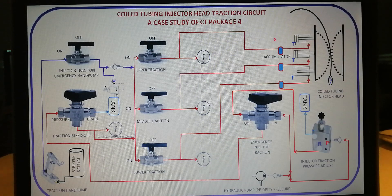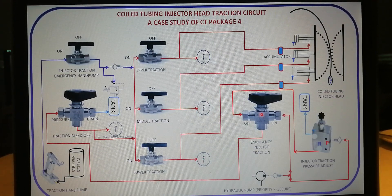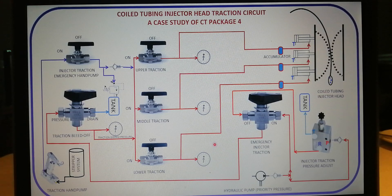The applied pressure to each of the traction cylinders is monitored with their respective pressure gauges. Each of the non-active ends of the traction cylinders is then routed back to the tank. This concludes the first phase of this presentation. Phase 2 is centered on traction control using the emergency injector traction three-way valve.